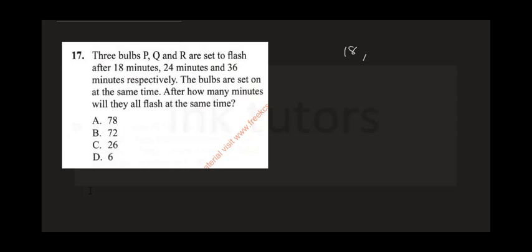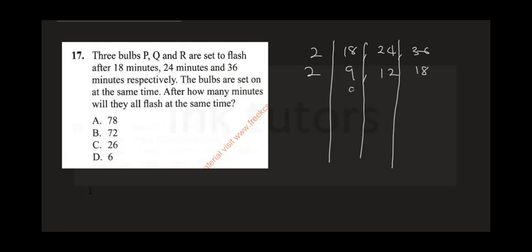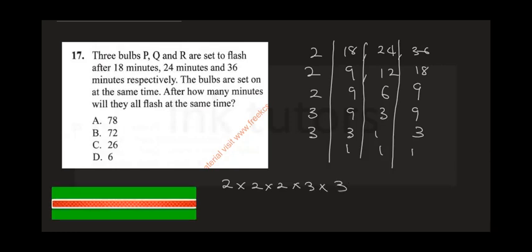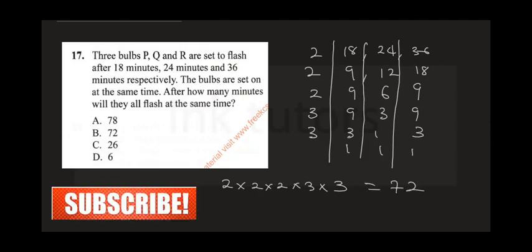Put 18, 24, and 36. Divide by 2: gives 9, 12, and 18. Divide by 2 again: gives 9, 6, and 9. Divide by 2 again — wait, clean up: divide by 3 to get 3, 2, and 3. Then 3 gives 1, and we have 1, 1, 1. Multiplying: 2 times 2 times 2 times 3 times 3 equals 4 times 2 is 8, times 3 is 24, times 3 is 72. The three bulbs will all flash at 72 minutes.